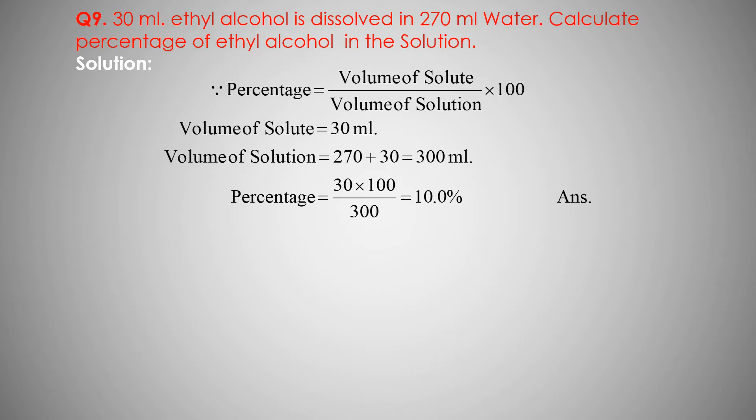Here, 30 milliliter of ethyl alcohol is given — milliliter means volume, so ethyl alcohol is the solute. And 270 milliliter water is given — water means solvent. Volume of solute is 30 milliliter. And volume of solution equals what, students?